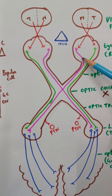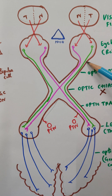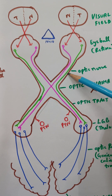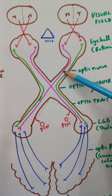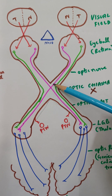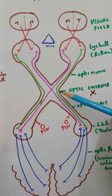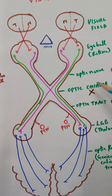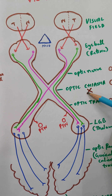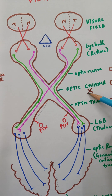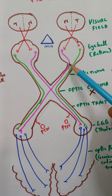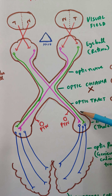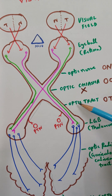The axons of the ganglion cell pass through the optic disc, forming the optic nerve — the optic nerve is made up of axons of the ganglion cell. As these axons continue through the optic chiasma — "chiasma" coming from the Greek letter chi, meaning a crossing over — the nasal retinal fibers cross over to the opposite side. The temporal fibers, however, continue on the same side without crossing.